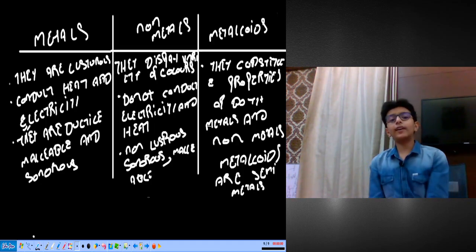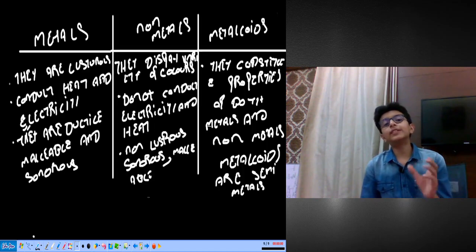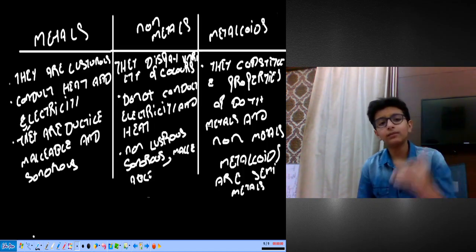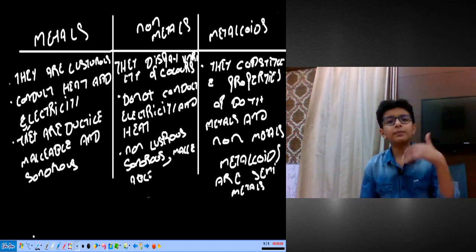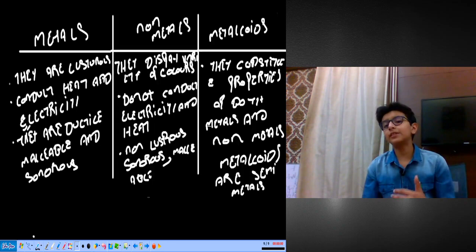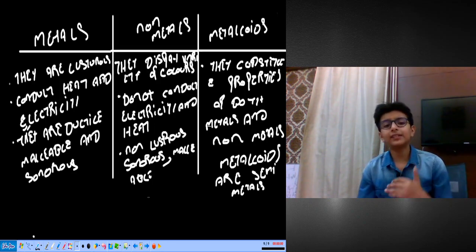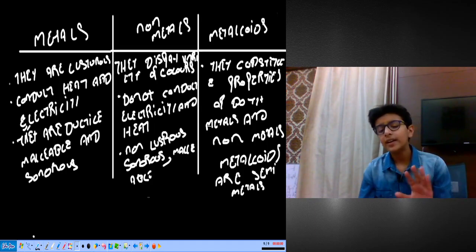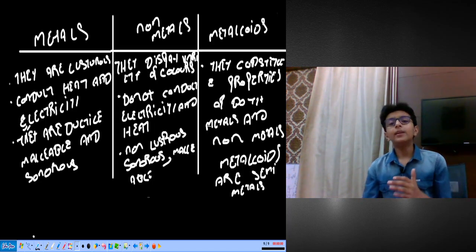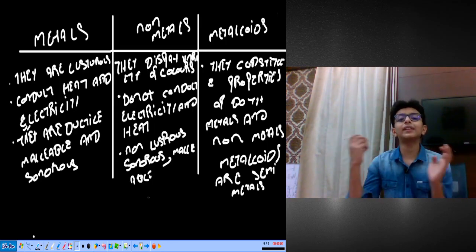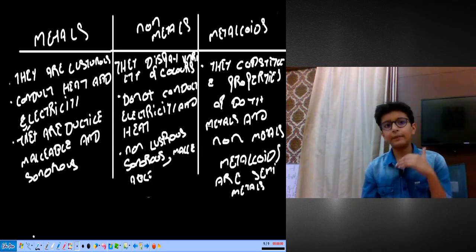Metalloids are a mixture of both metals and non-metals. In depth, metals are ductile, sonorous, and malleable — malleability is the property in which a metal can be beaten into thin sheets, while ductility is the property in which a metal can be drawn into thin wires. Metalloids, also called semi-metals, constitute properties of both metals and non-metals. This distinction between metals and semi-metals is important and commonly appears in exam papers.